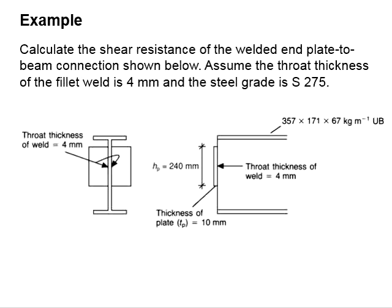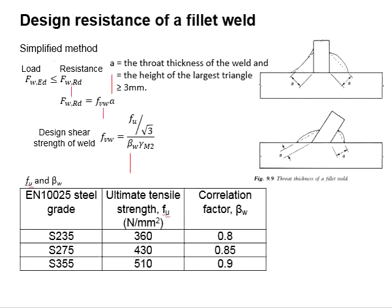To solve these questions, first we need to determine the equations to be used to check the resistance of the fillet weld. As given here, the design shear strength will be equal to the stress multiplied by the throat thickness, where the welded strength is given in these equations.